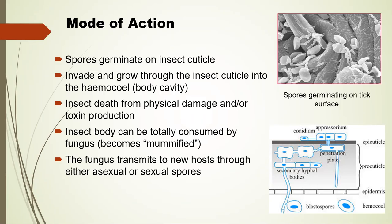To transmit to new hosts, fungi produce asexual or sexual spores. Asexual spores are a strategy to produce a lot of spores rapidly to make the most of a food source — that has consequences for biological control. Sexual spores are often produced after going through a resting period, like cold or dry weather, though that's not always the rule.